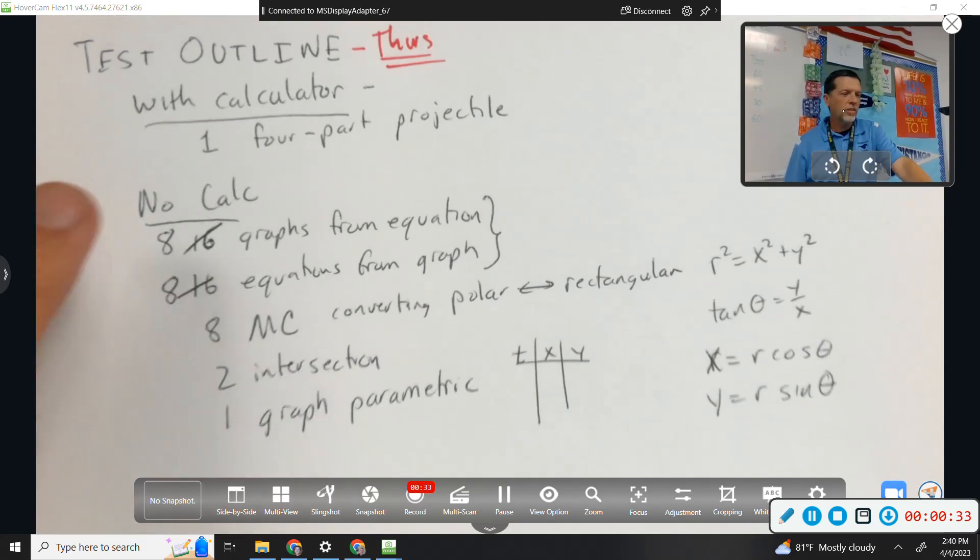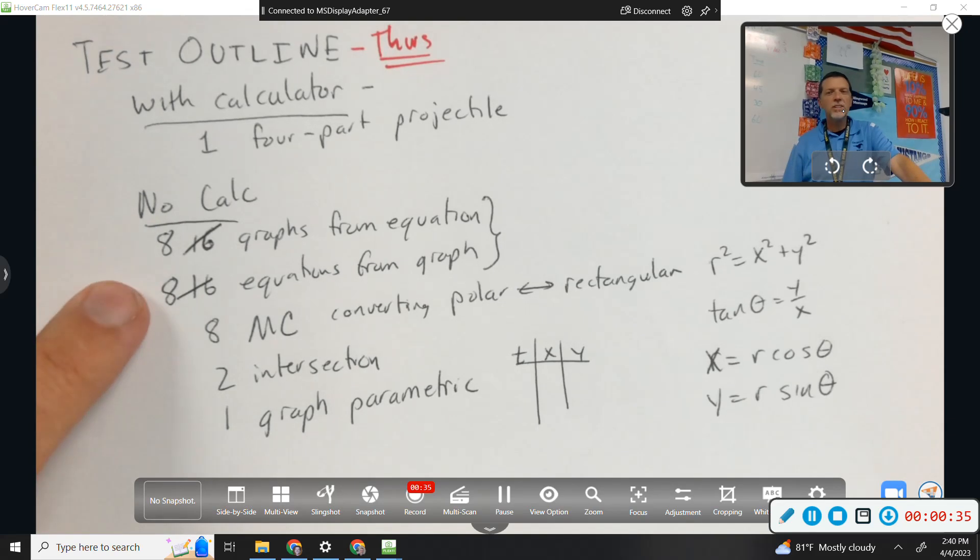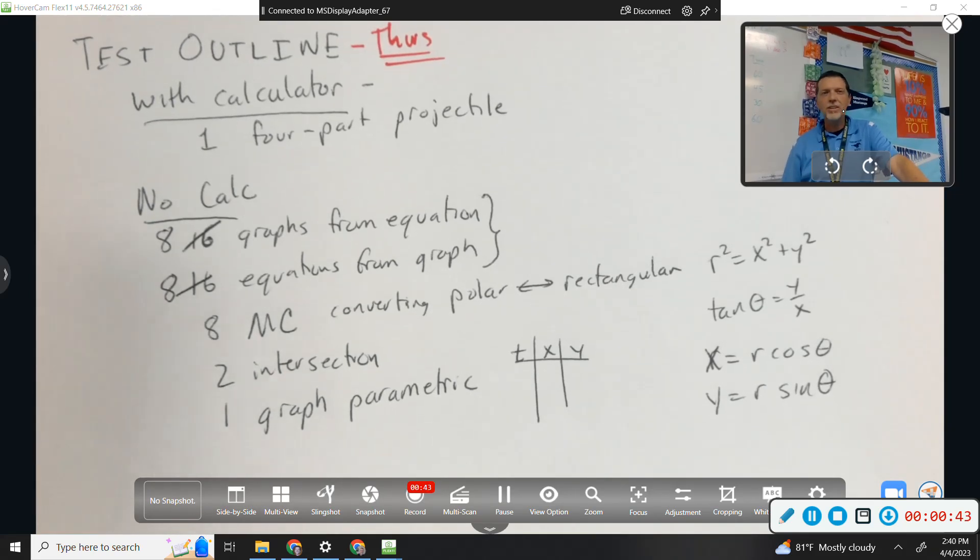So the vast majority of it is no calculator. It's marked out because this used to be a longer test, like a block day test, I think. So I mixed half of the graphs and half of the equations, and you're still getting eight of each. So there's still plenty of questions there and plenty of points to be had or missed, but hopefully had.